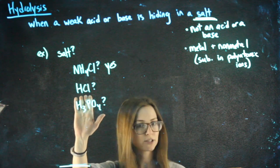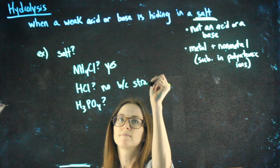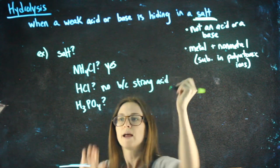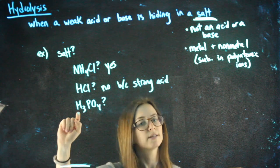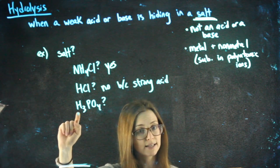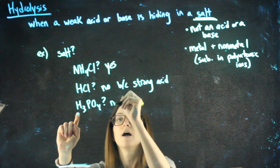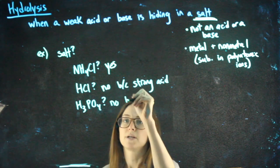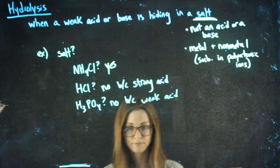HCl, not a salt, because it's a strong acid. H3PO4, it starts with the H. That gives me a pretty good idea that it's going to be an acid. It's not one of the strong ones. But if you look on your chart, it is not a salt, because it's a weak acid.